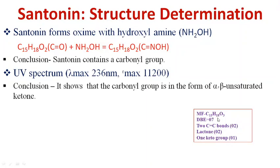Up to this point, five double bond equivalents have been justified: two carbon-carbon double bonds, one lactone ring (corresponding to two double bond equivalents), and one keto group. Two double bond equivalents are still unaccounted for.